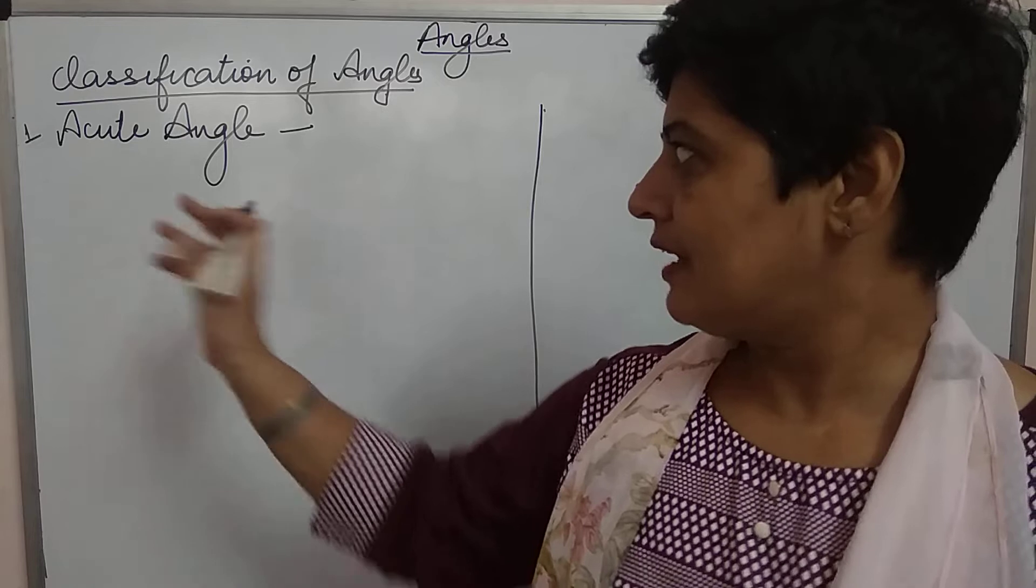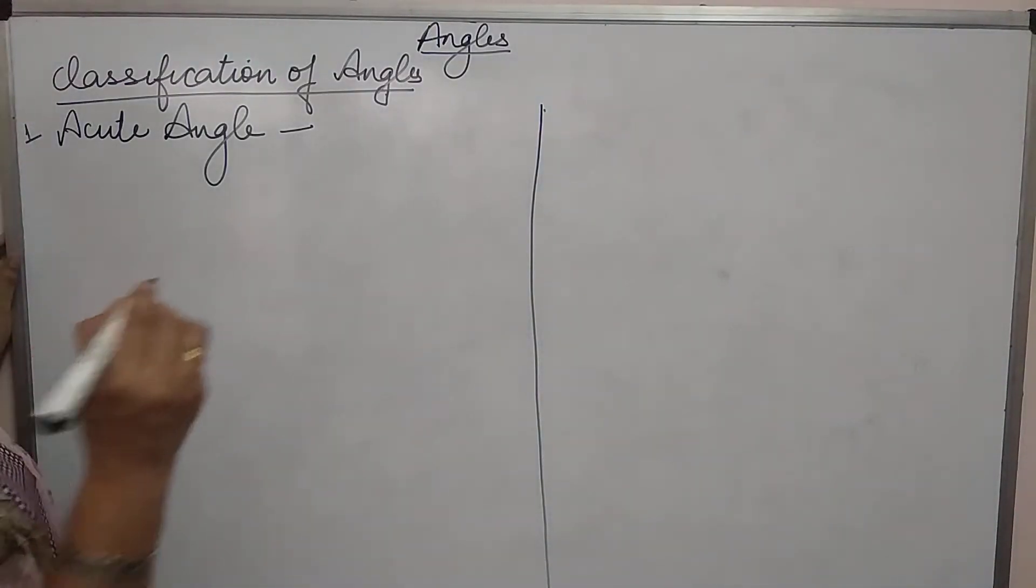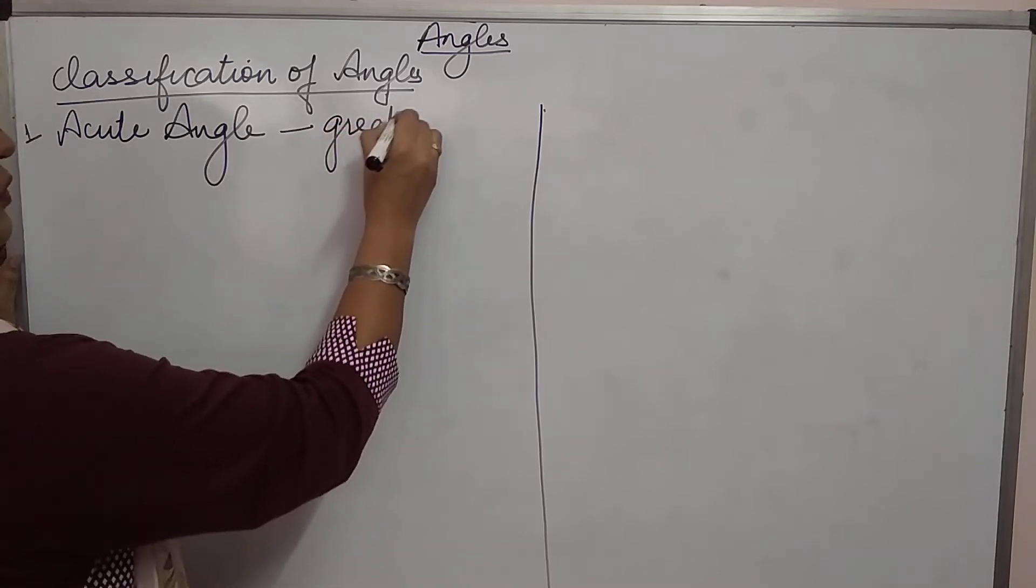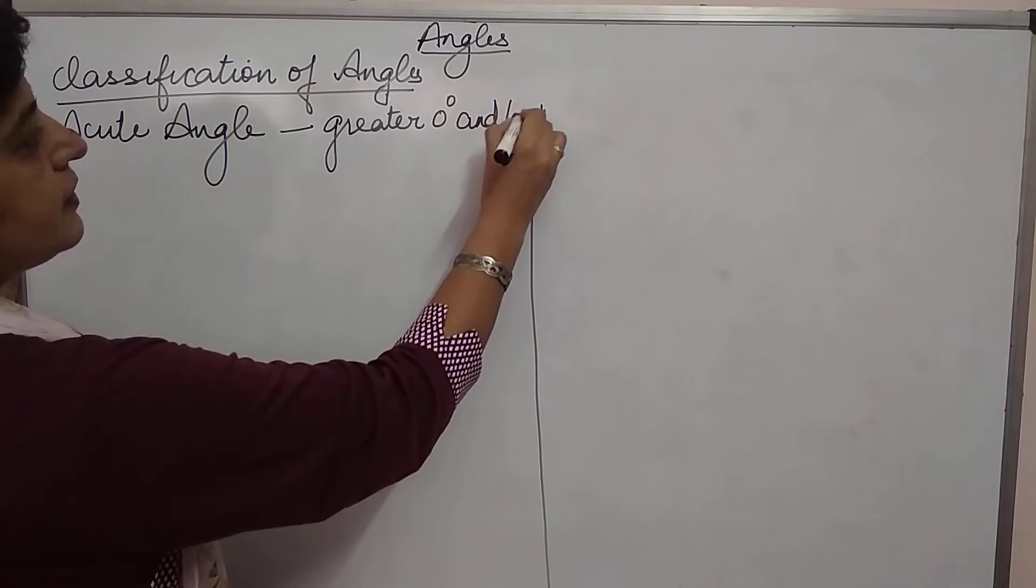So the first angle is acute angle. Acute angle is an angle which is greater than 0 degree and less than 90 degree.